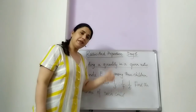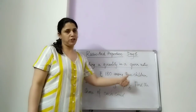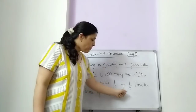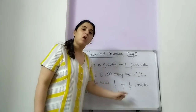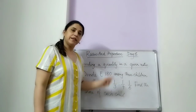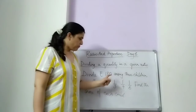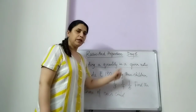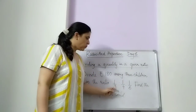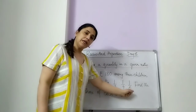We multiply each term of the ratio by the LCM of their denominators. Let us do this: 1/3 is to 1/4 is to 1/6. What is the LCM of 3, 4 and 6?